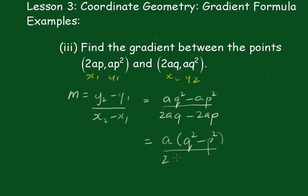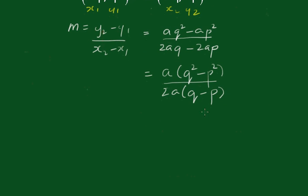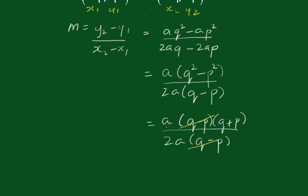Over 2a. Instead of q minus p at the top we factorize: q minus p outside of q plus p, all over 2a into q minus p. Of course now what happens, these go out and these go out. You get this result: q plus p, or p plus q. P plus q over 2a is your final answer.